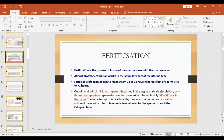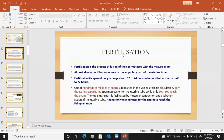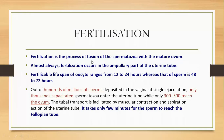Hi friends, I'm back again with the topic fertilization. Fertilization is the process of fusion of spermatozoa with the mature ovum. In the last class we dealt about the spermatozoa — the structure of the spermatozoa as well as the structure of the matured ovum. Today we are going to deal in detail about the fertilization, which involves the fusion of the male gamete and the female gamete.